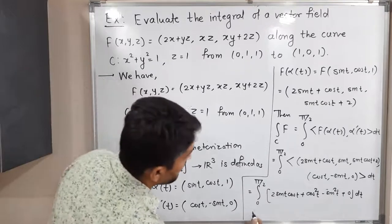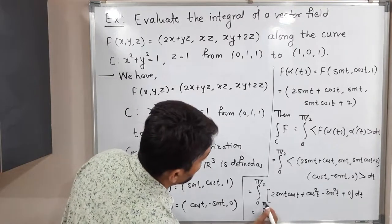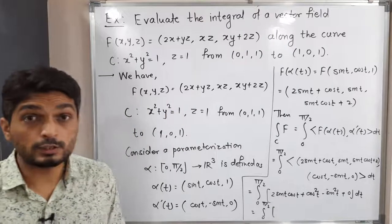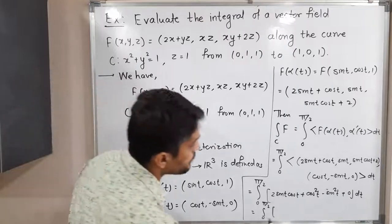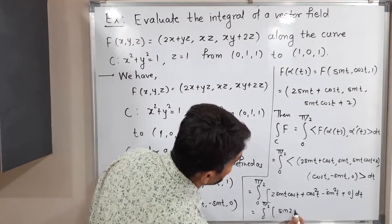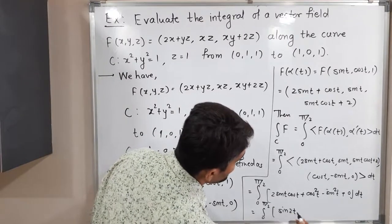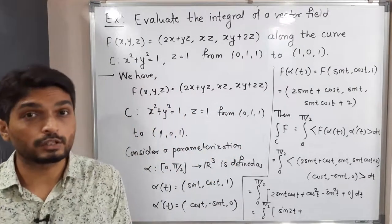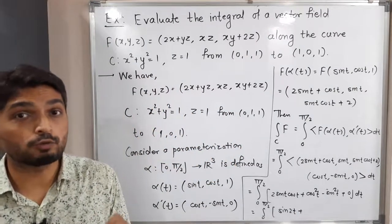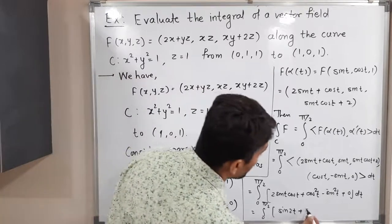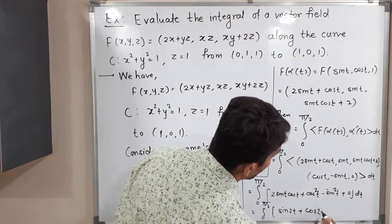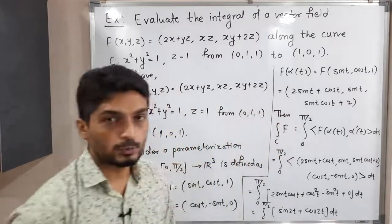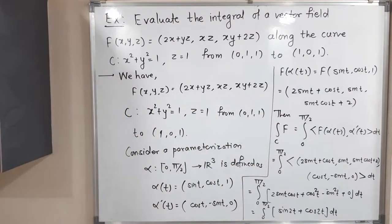Writing this properly: 2 sin t cos t is the formula for sin 2t, and cos²t − sin²t is the formula for cos 2t. So the integral from 0 to π/2 becomes the integral of (sin 2t + cos 2t) dt.